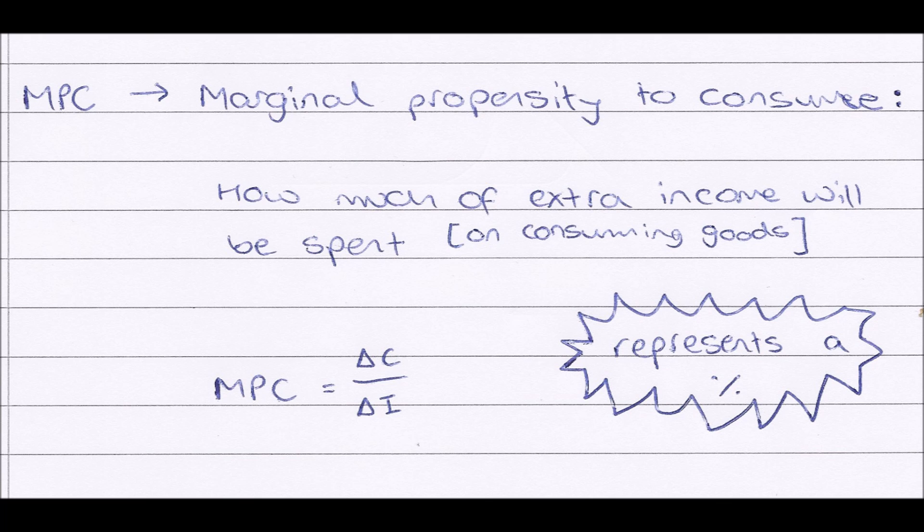Next, we have our MPC, or our marginal propensity to consume. This is very similar to APC, but works in terms of extra income. So our marginal propensity to consume shows how much extra income will be spent on consuming goods.